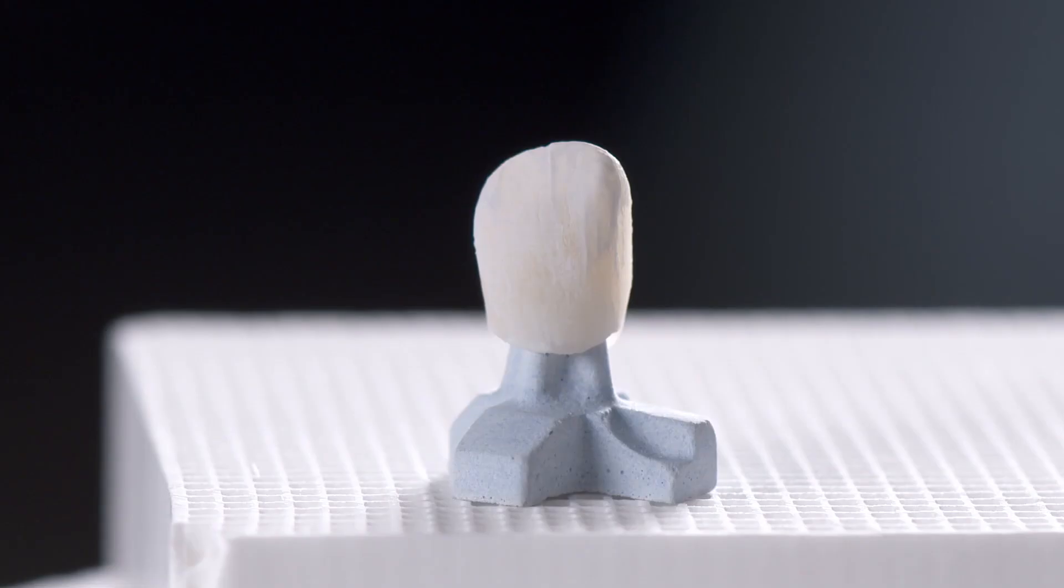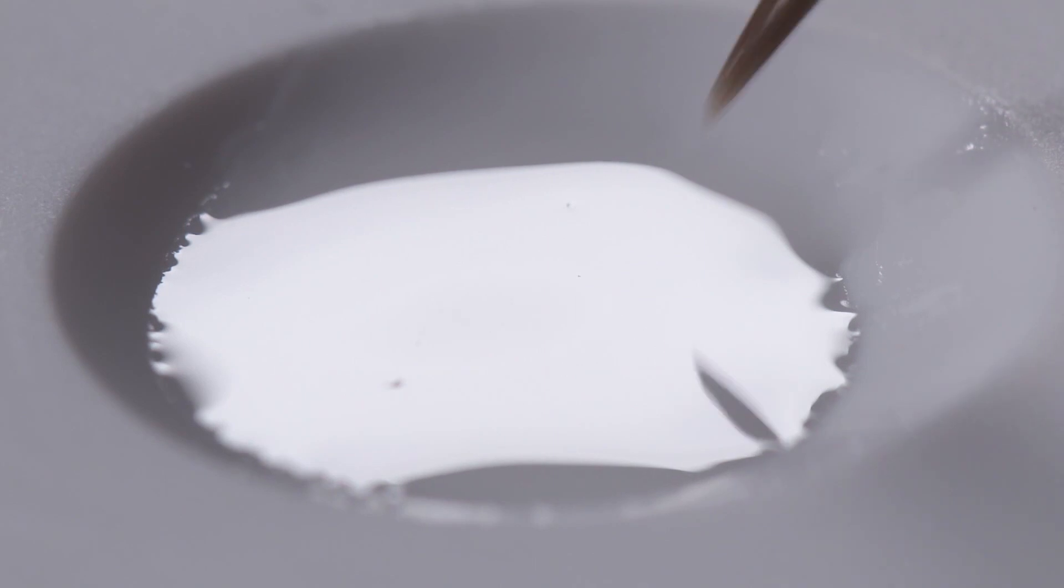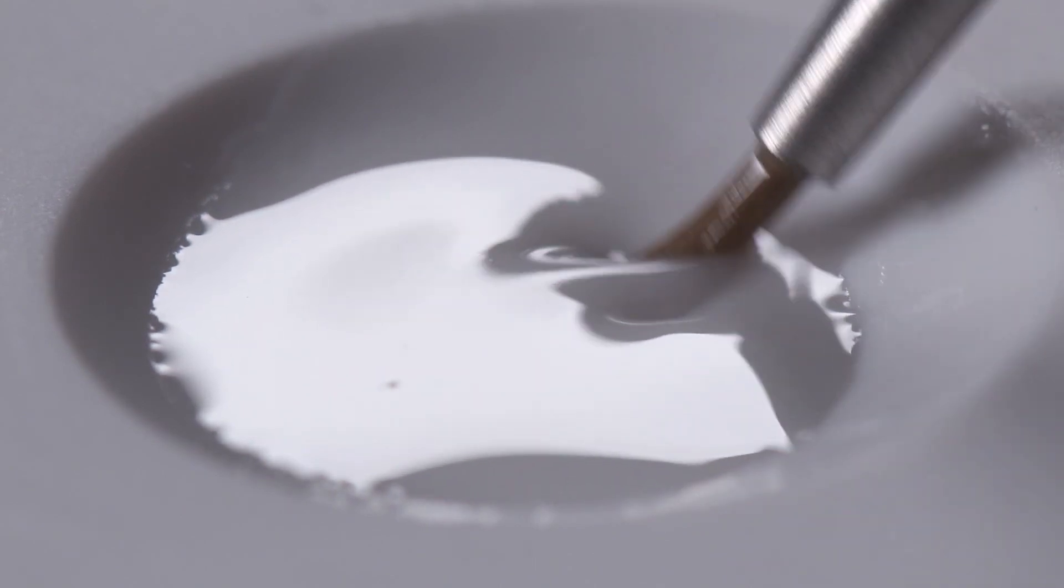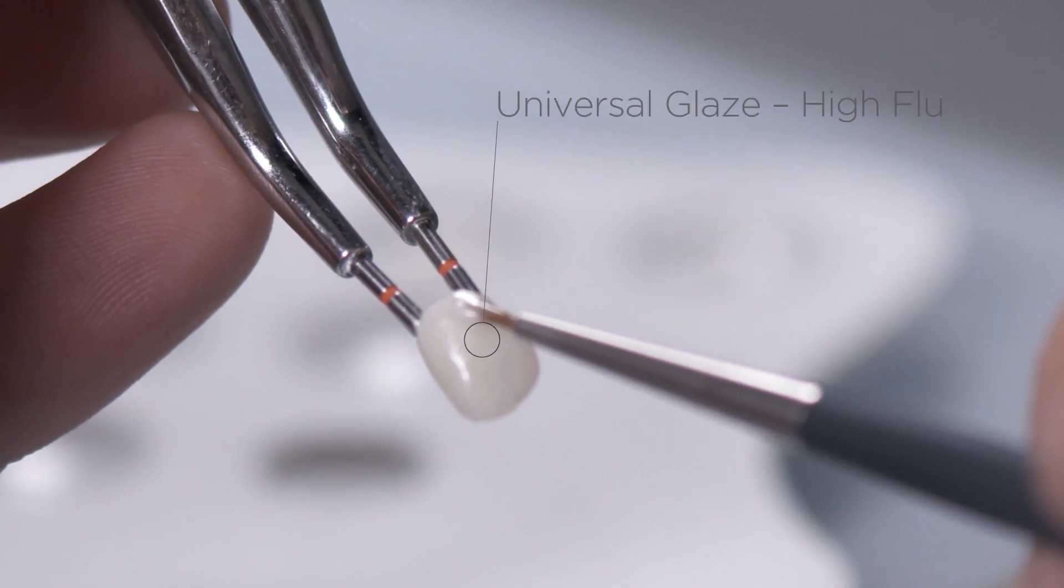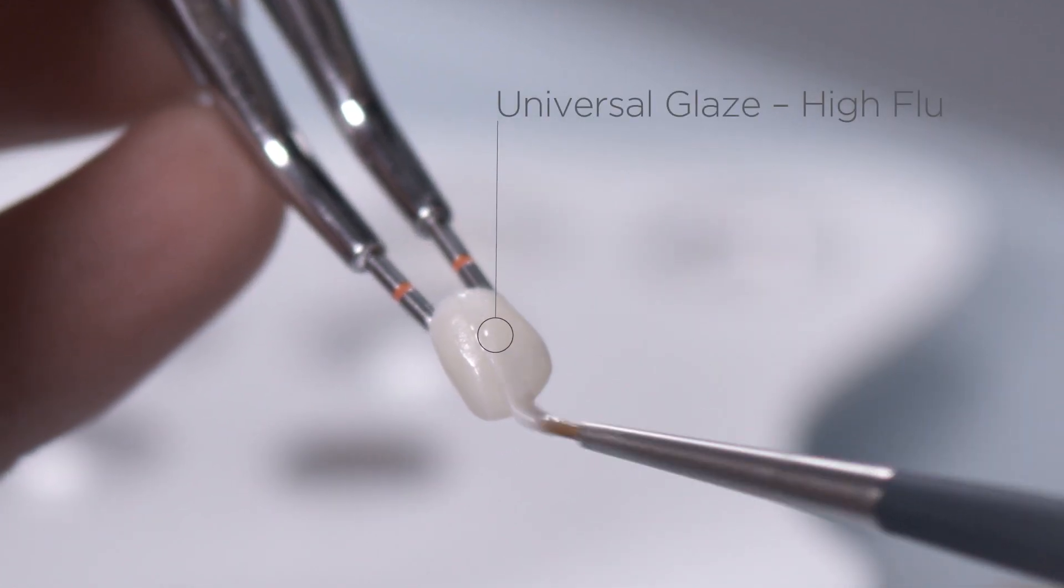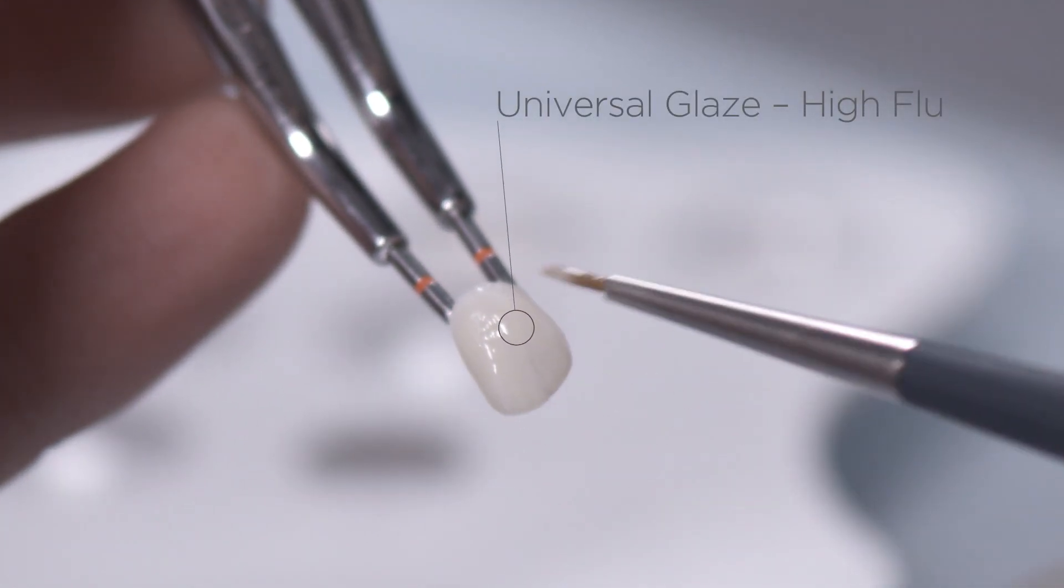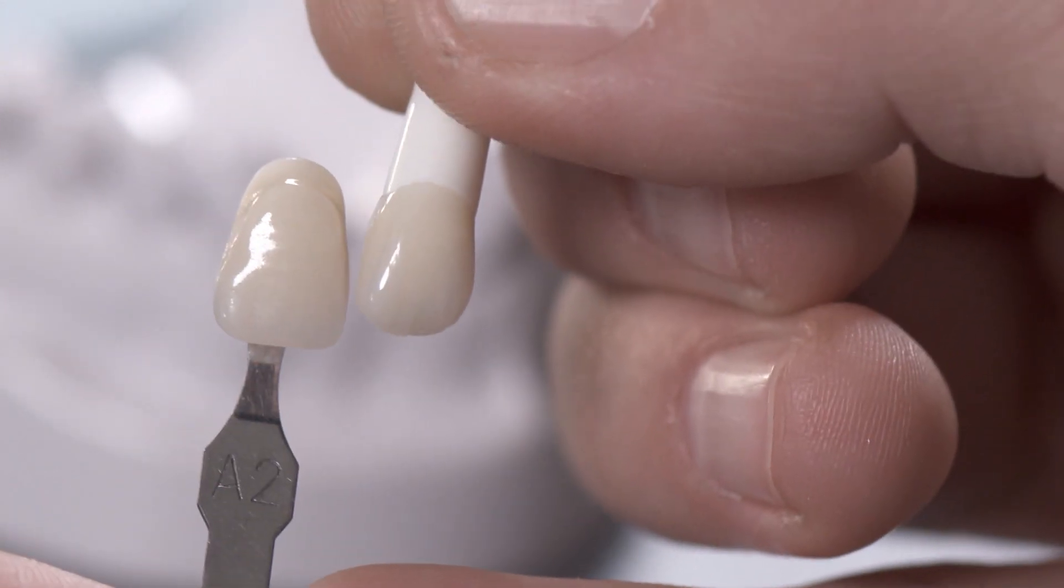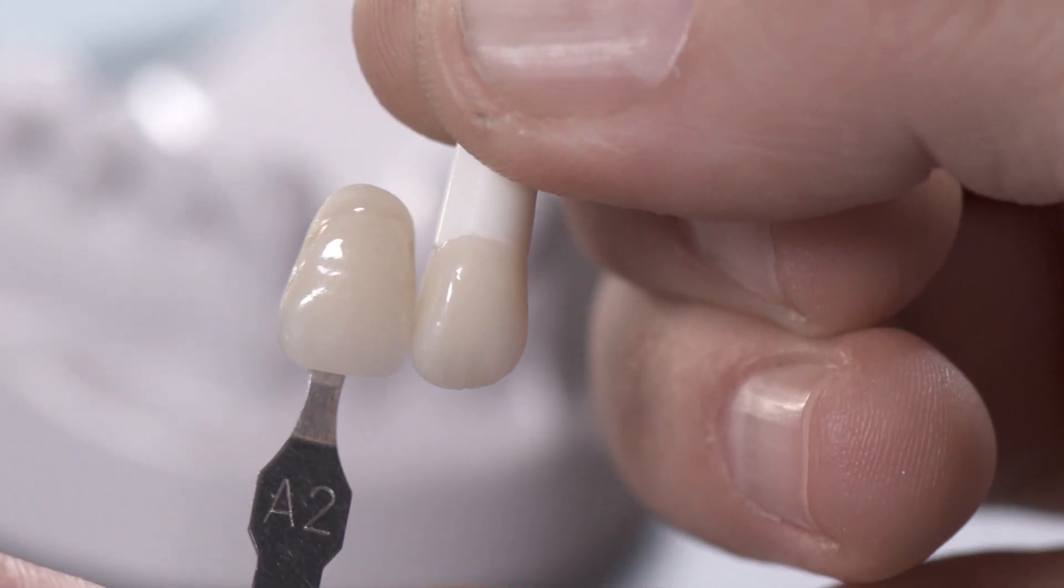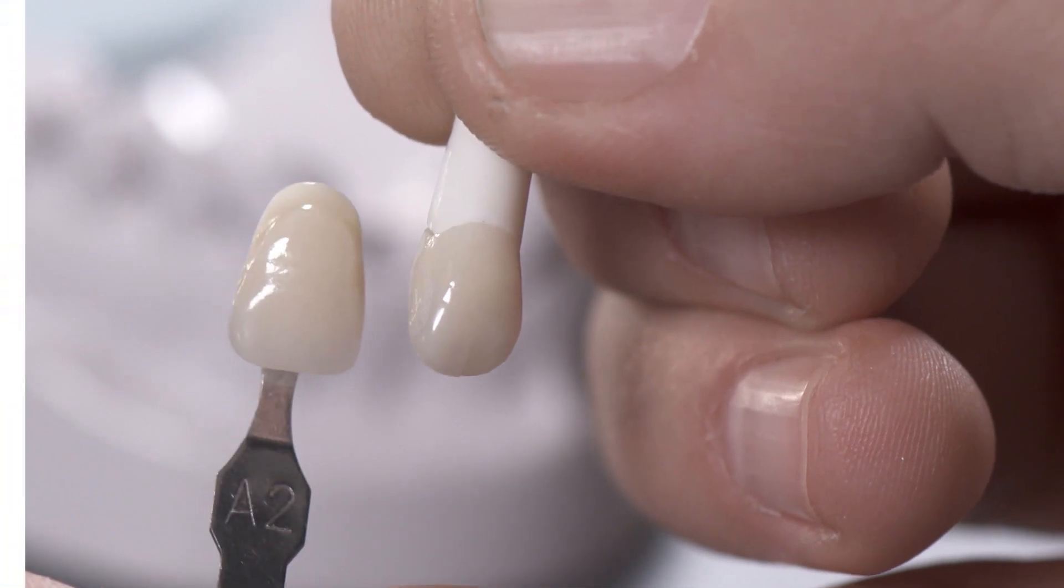After stain firing, only HIFLU Universal Overglaze is applied across the monolithic restoration. The final shade check against the shade tab confirms the quick and easy shade reproduction with great aesthetics.